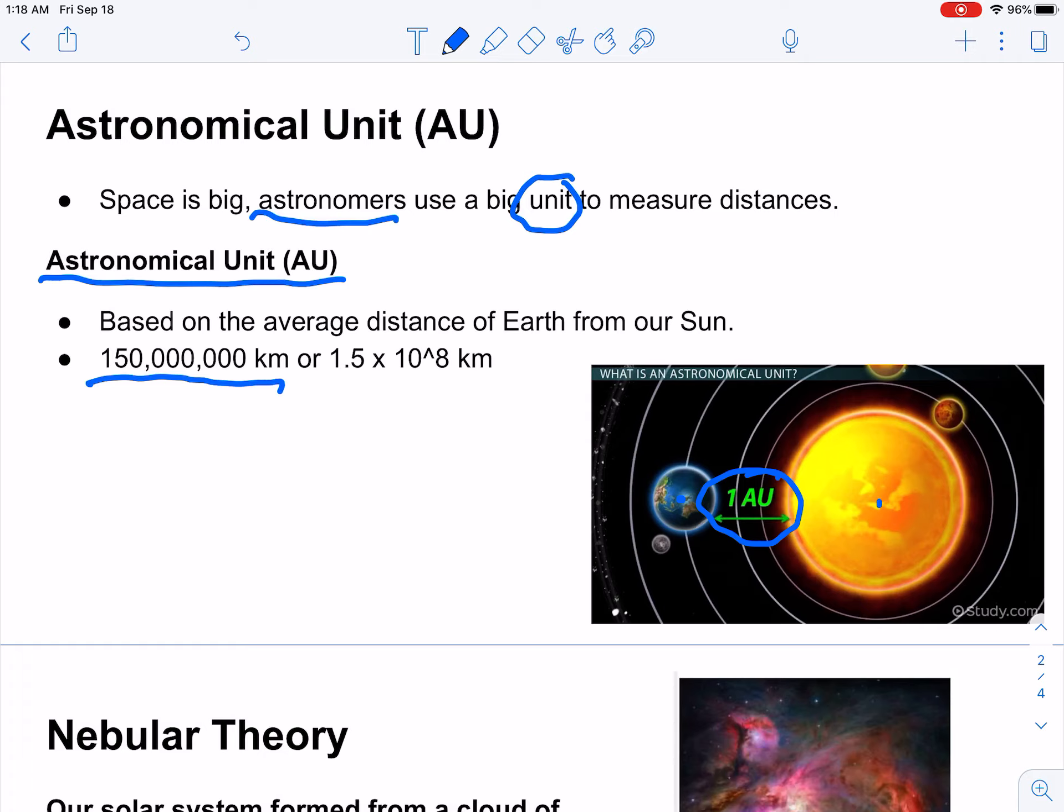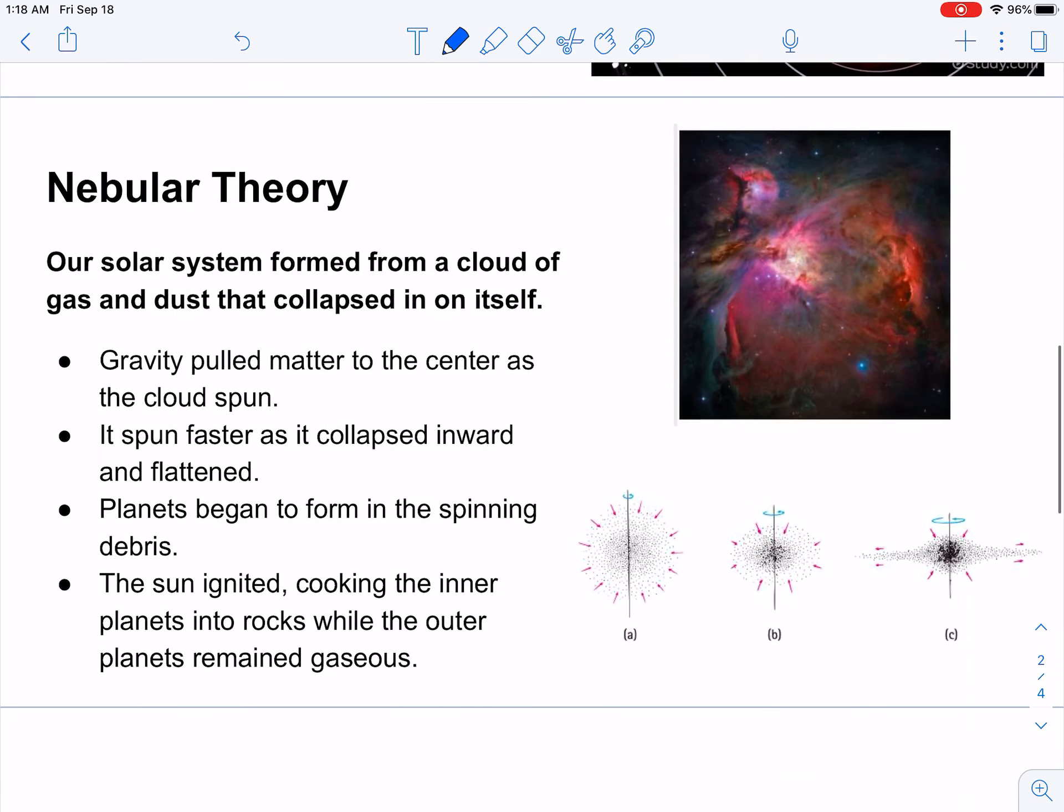Again, a distance that is difficult to wrap your mind around, but is useful when we're trying to describe the distance between Earth and Neptune, for example, because then it ends up being about 40 AU or something like that. You'll be working with some AU today for an activity.